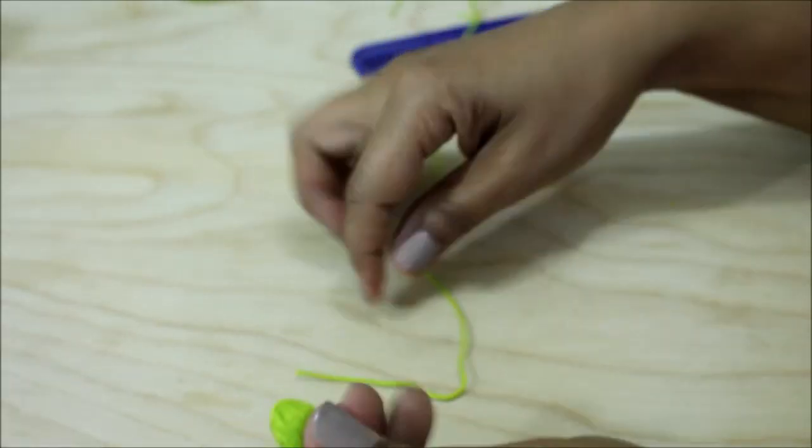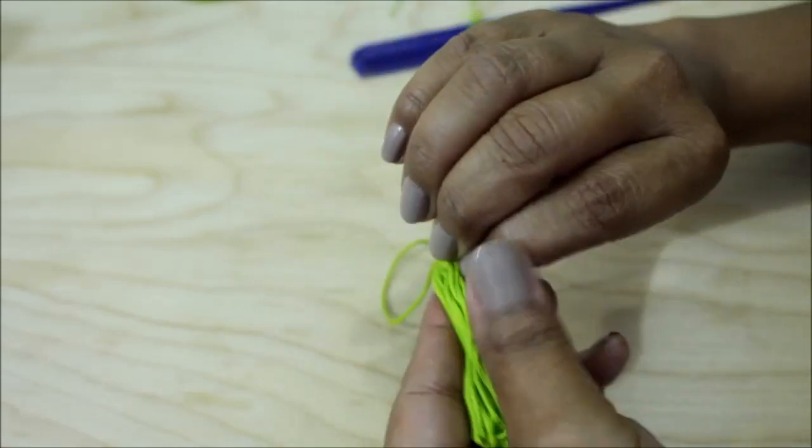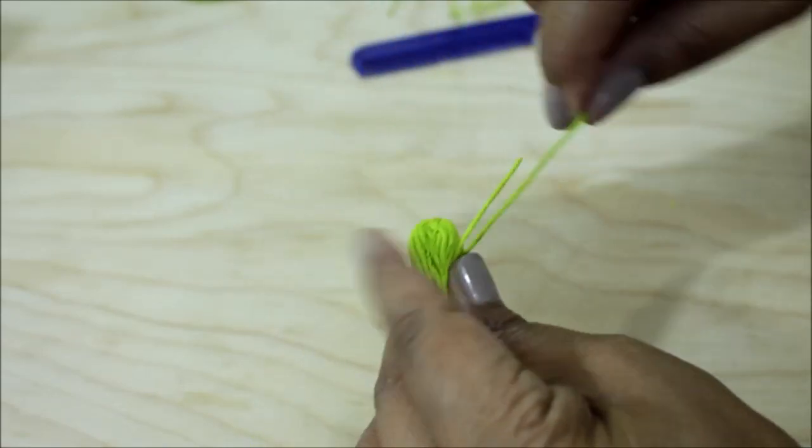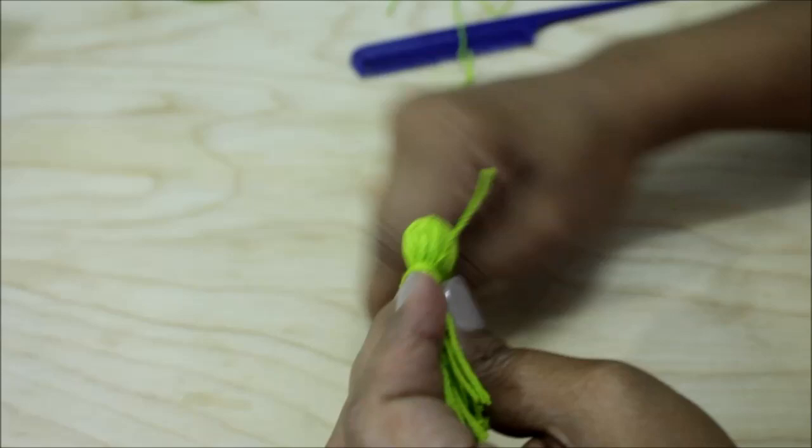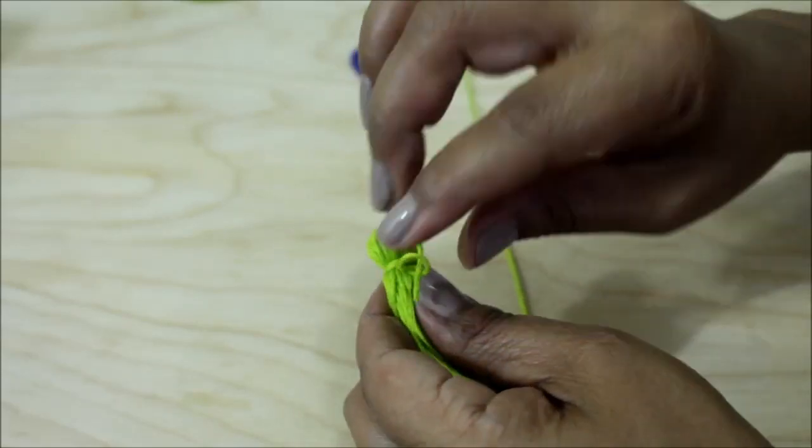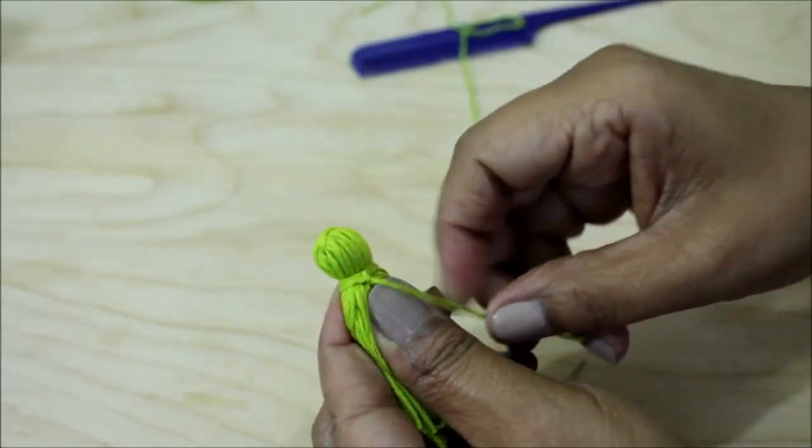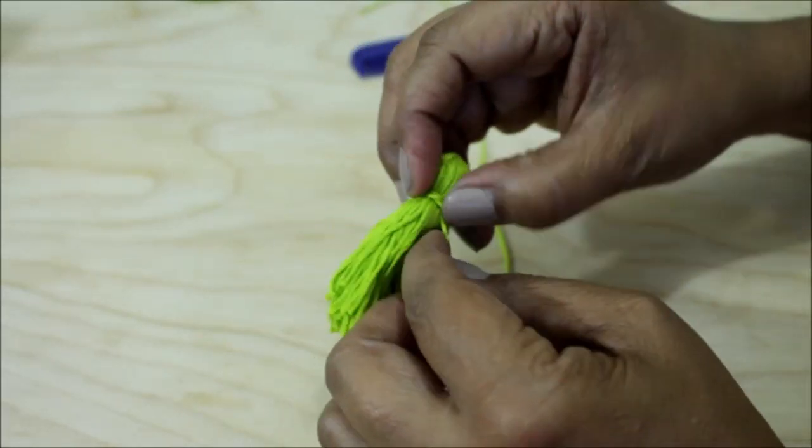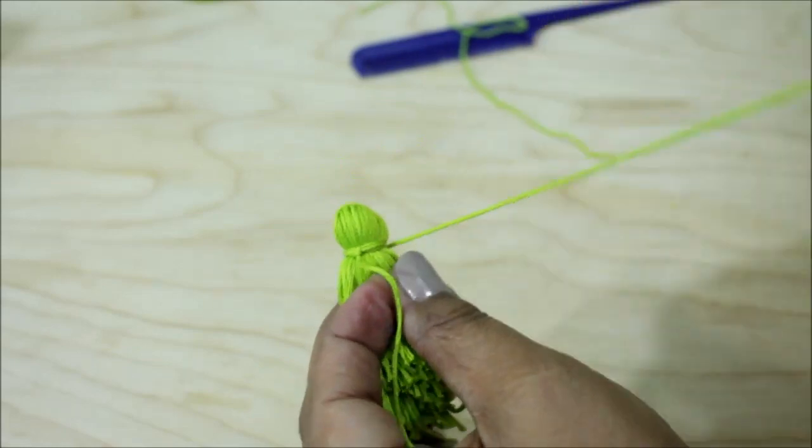Then I take another strand and make like a loop and then with the other part wrap it around the little head that you make when you fold it in half about four times. Then take that tip and put it through a loop and tighten it to make a knot.